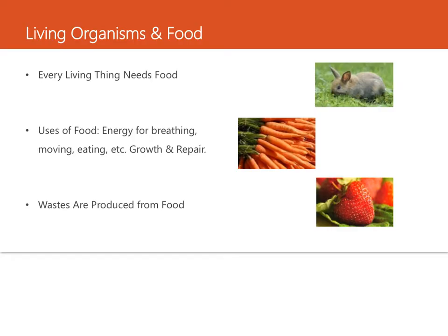Not everything that an animal eats can be used as food. Most foods contain at least a little material that the body cannot break down and use. This may be like the seeds of fruits or fibers in certain plants. The body simply eliminates the parts that cannot be digested and used for energy.